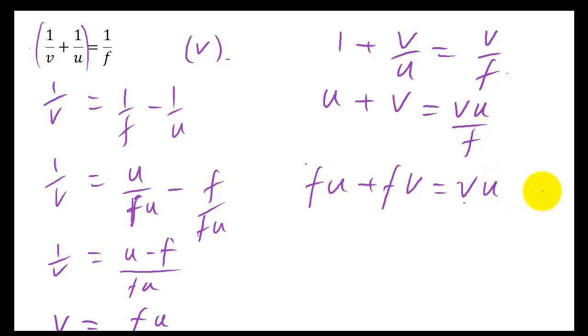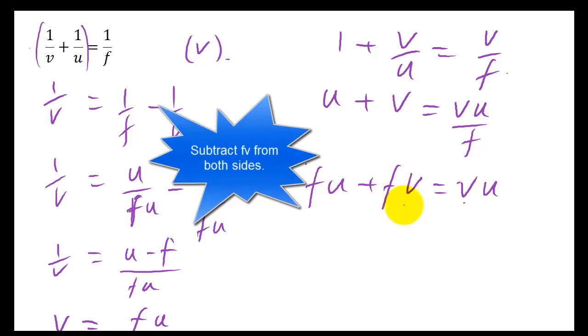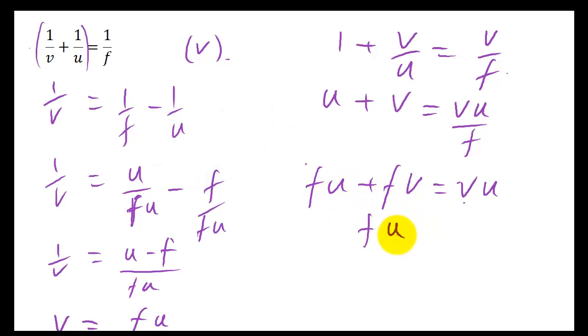Now I need to get all the V's together. So this term has a V in it, and this term has a V in it. So therefore, to get them on the same side, I need to subtract FV. So to subtract FV from this side, I'm just left with the FU. VU minus FV on this side, because I'm going to subtract the FV from this side.